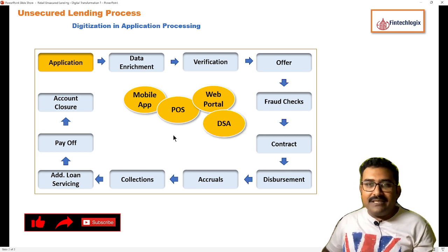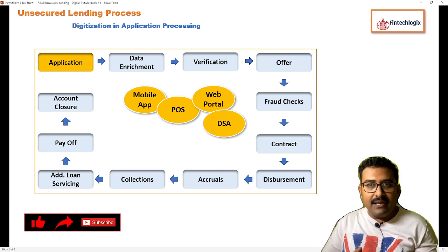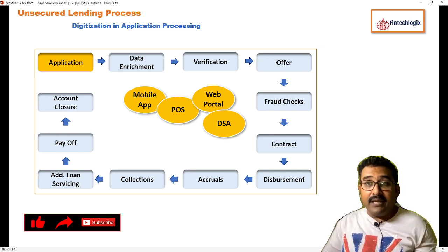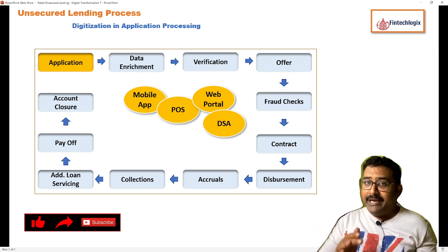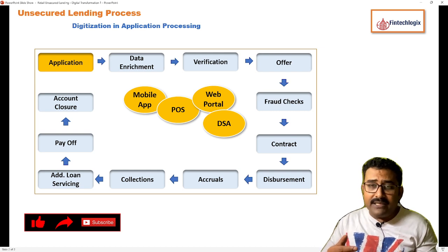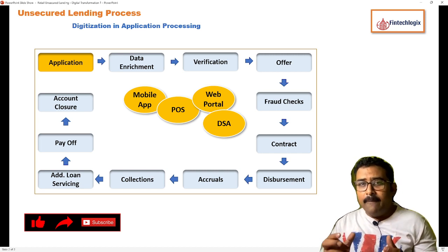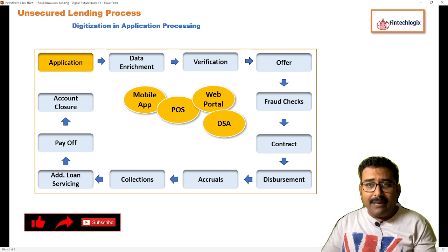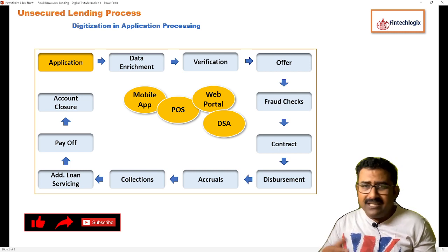The next one is DSA — Direct Sales Agents — who are agents that facilitate the application submission process for customers. In the initial days, DSAs used to come with physical forms to fill on behalf of the customer, but it was a tedious process because the paper forms had to be taken to the branch, which added to the turnaround time. Now, DSAs come with sophisticated devices where all customer details can be captured, including thumb impressions and digital signatures, making it a quick process.